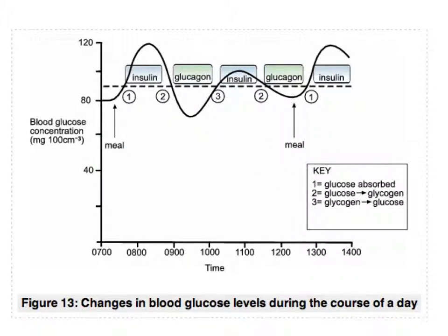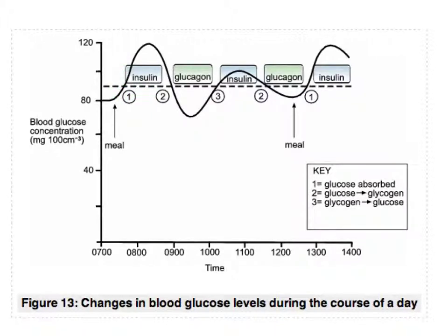There's a meal here and a meal here, with different numbered events happening. Looking at the key: one is that our cells are taking up glucose; two is that glucose is being converted into glycogen in the liver; and three is that glycogen is converted back into glucose, also in the liver. So here we have a meal — number one, glucose is absorbed. Insulin is also being triggered to be released, with the beta cells within the islets of Langerhans responding to that increased level of blood glucose and secreting insulin.